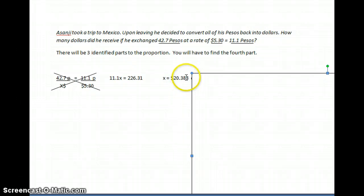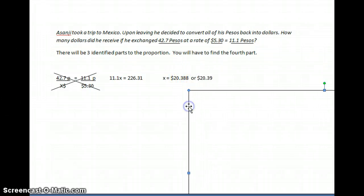Since this is dollars, I'm going to round to the nearest cent. Here's the nearest cent, 8. So that means I'm going to look to the right. This 8 here in the hundredths place is larger than 5, so it's going to bump that 8 up to 9. So I get $20.39.